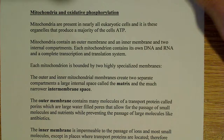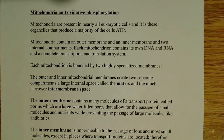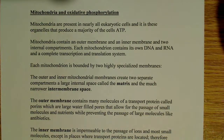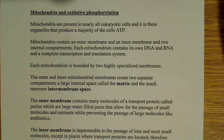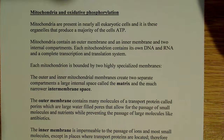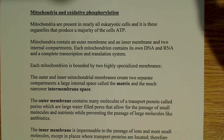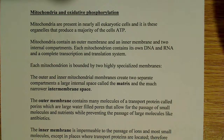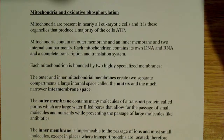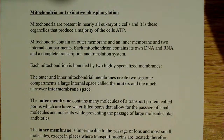The mitochondria contains an outer membrane and an inner membrane, and by having the outer and inner membrane, they actually contain two internal compartments. Each mitochondria also contains its own DNA, RNA, and transcription and translation machinery.